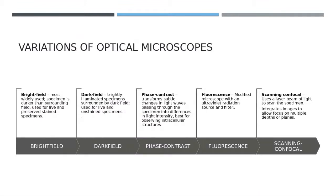There are several types of optical microscopes. The most commonly used in regular labs is the bright field light microscope. 'Bright field' means the surrounding environment is bright or lighter, and the object appears darker.